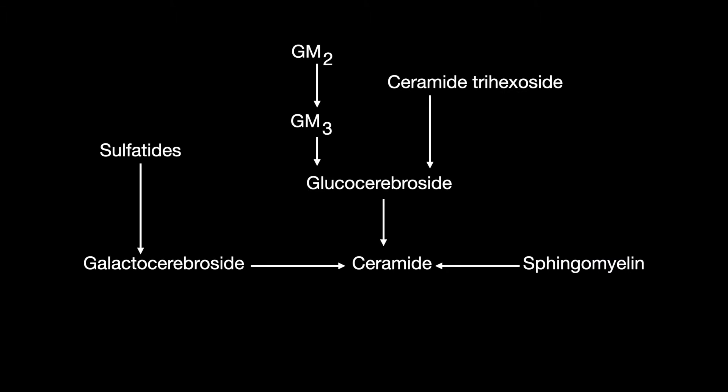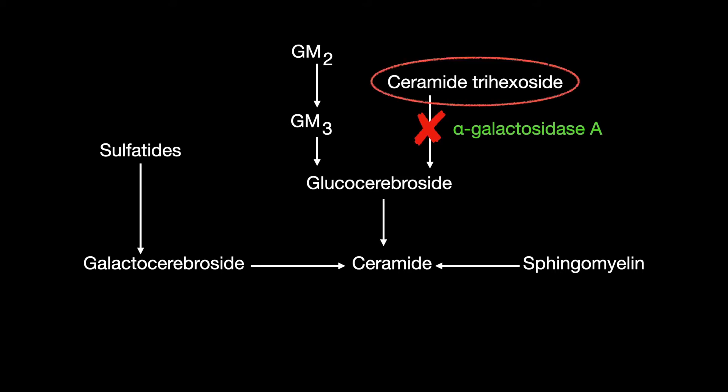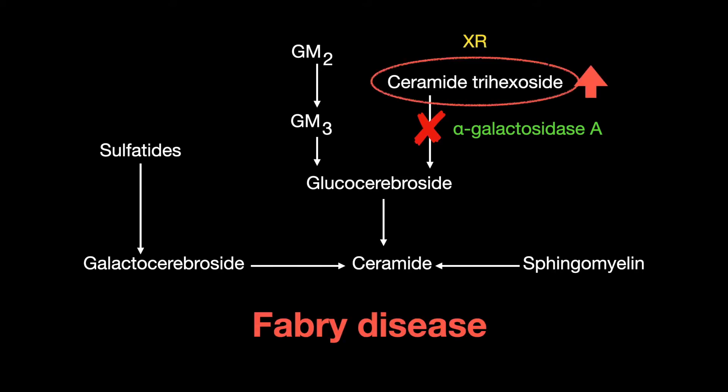The enzyme that catalyzes ceramide trihexoside to cerebroside is alpha-galactosidase A, and a deficiency in it causes ceramide trihexoside to build up. This disease is called Fabry disease.